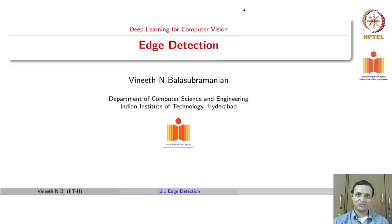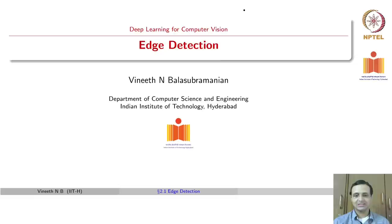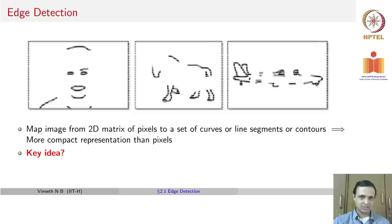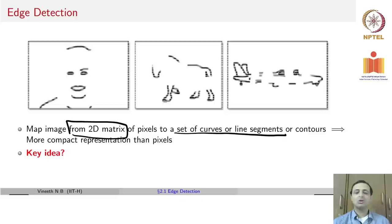Moving on from the previous set of lectures which introduced you to basics of image processing, we will now move to the next segment on understanding and extracting higher level features from images. We will start with our first lecture on edge detection. The idea of detecting edges is about mapping the image from a 2D matrix to a set of lines or curves, which are a more compact representation of the image.